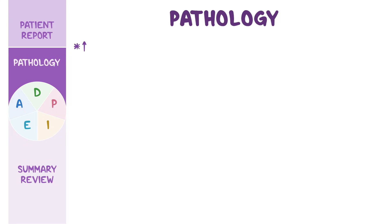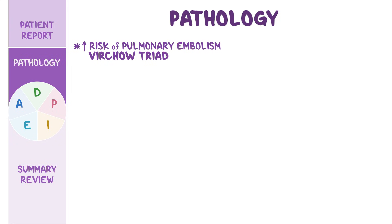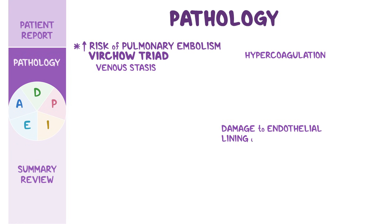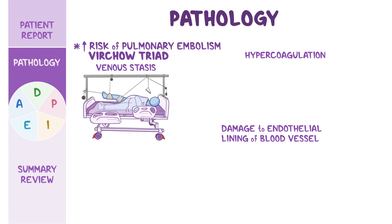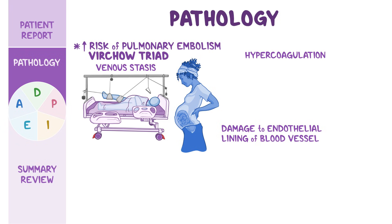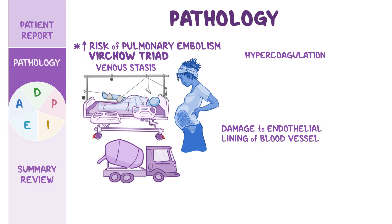Factors that increase the risk of a pulmonary embolism are summarized in the Virchow's triad, which includes slowed blood flow, or venous stasis, hypercoagulation — meaning the blood is more likely to form clots — and damage to the endothelial lining of a blood vessel. Venous stasis can occur because of prolonged immobility, like during a severe illness or after surgery, when an enlarged uterus compresses the nearby veins during pregnancy, or due to long-haul travel.